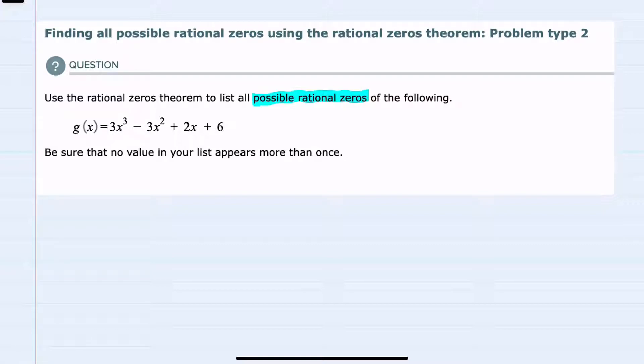We're asked to find all possible rational zeros for g of x, and when we create that list to make sure we're only writing numbers once. Our g of x is already in descending order.